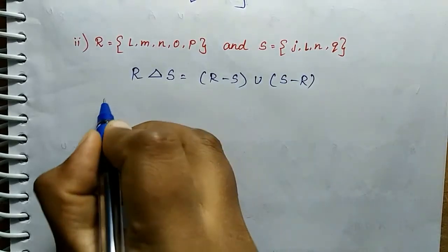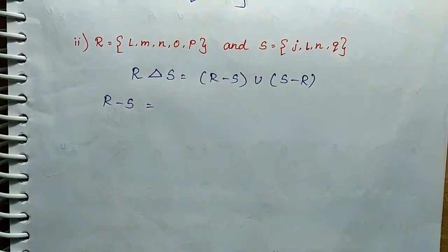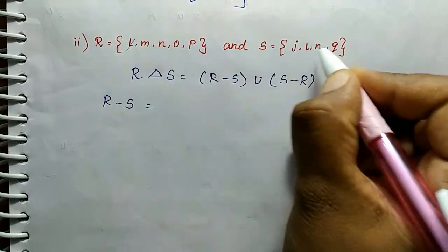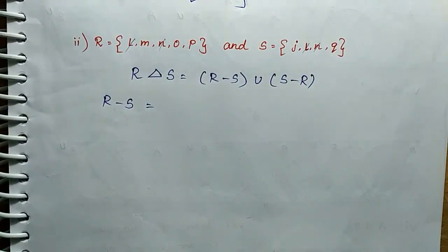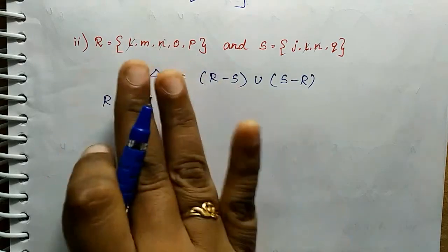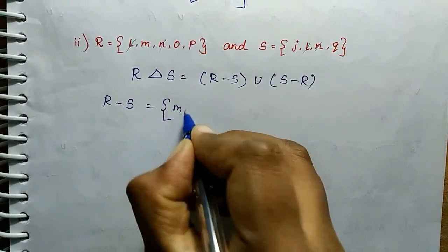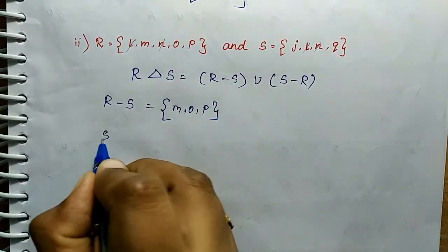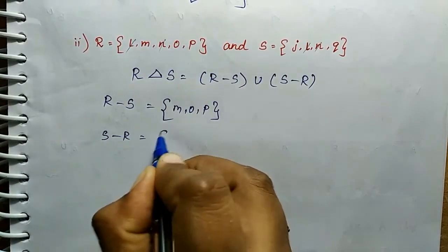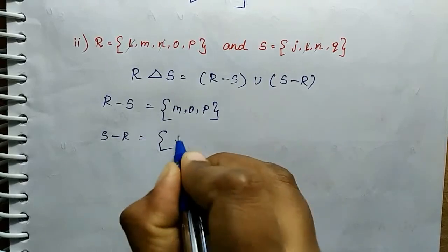R minus S. We identify common elements L and N, subtract them. Remaining values are M, O, P. Same thing, S minus R. Remaining values are J, Q.